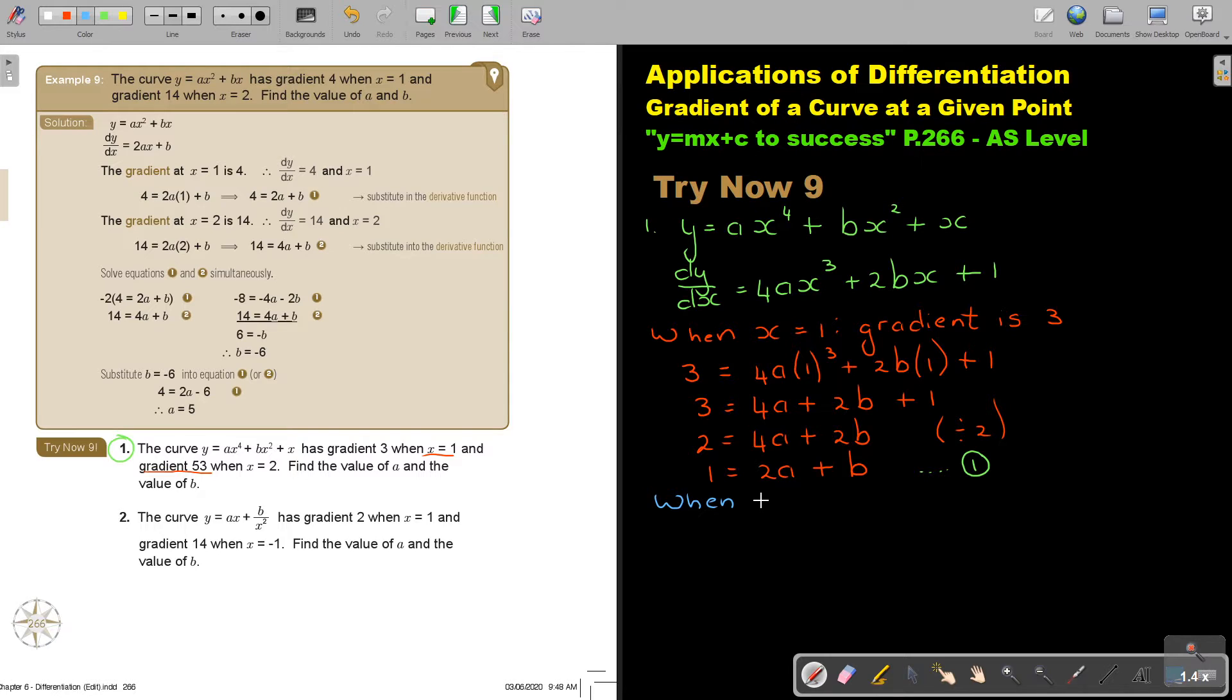When X is 2, the gradient is 53. So when X is 2, the gradient is 53. I'm going to say 53, and now I'm going to substitute it. It's 53, it's the gradient. And it's 4A, and what is X, it's 2. I'm just substituting again into this equation. Don't forget, this is my derivative function, or the differentiated function. So 2B, and my gradient, 2B plus 1.